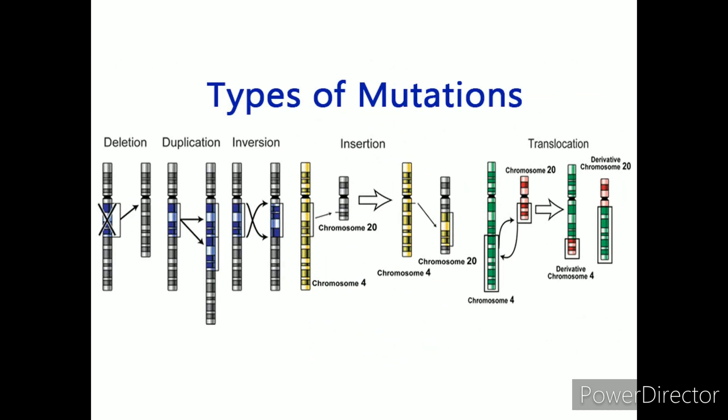Deletions. A deletion resulting in a frameshift occurs when one or more base pairs are lost from the DNA. Insertions. The insertion of additional base pairs may lead to frameshifts depending on whether or not multiples of three base pairs are inserted.